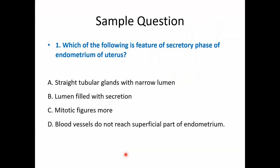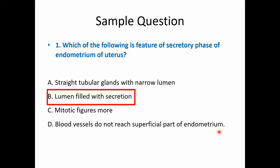Sample question: Which of the following is a feature of the secretory phase of the endometrium? Options: straight tubular glands with narrow lumen; lumen filled with secretion; mitotic figures are more; blood vessels do not reach the superficial part. The answer is: lumen filled with secretion. All other features are related to the proliferative phase of the endometrium.